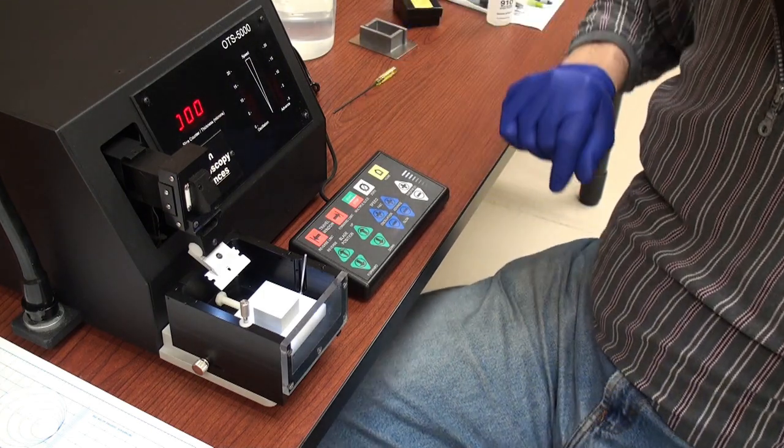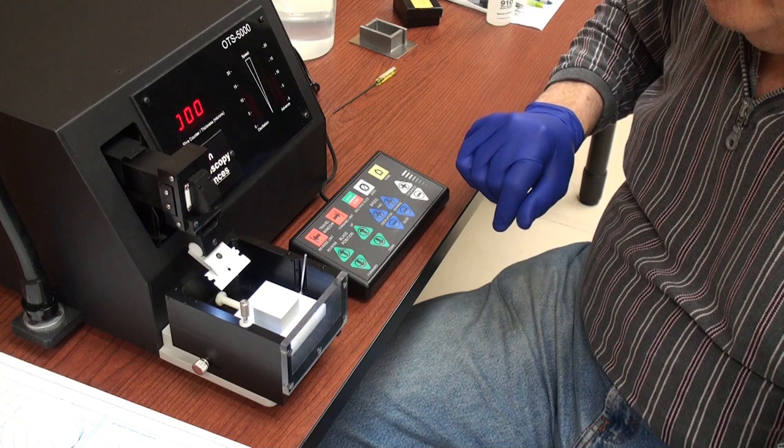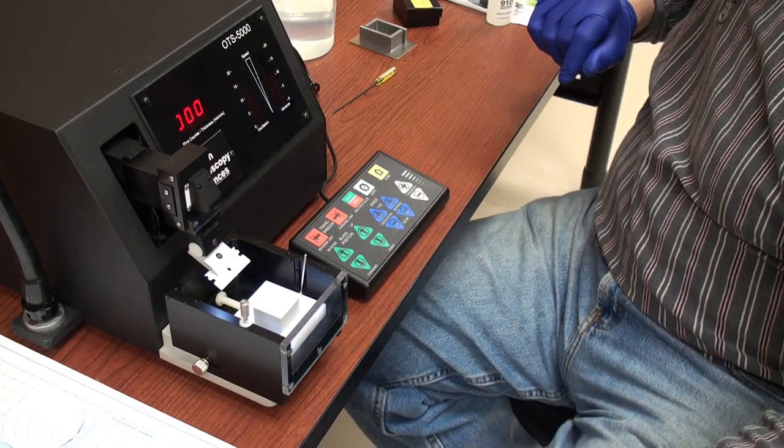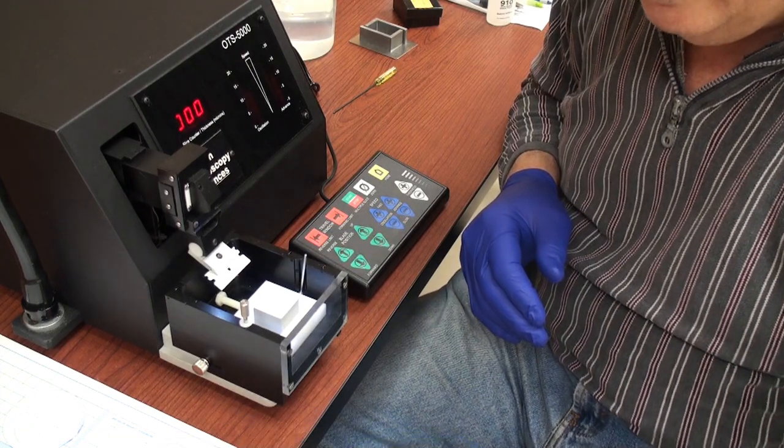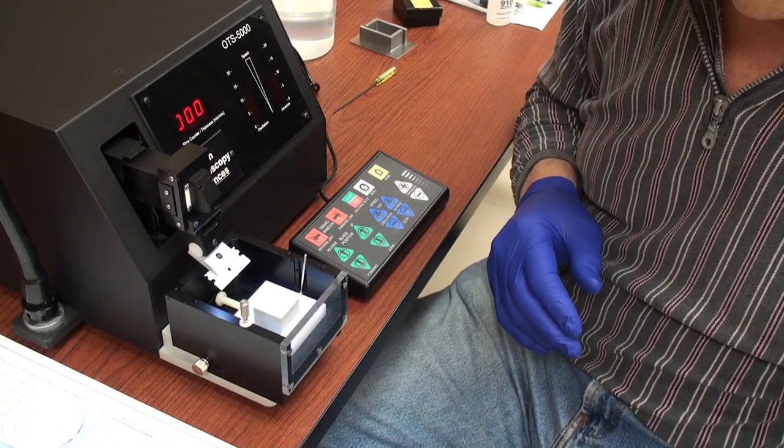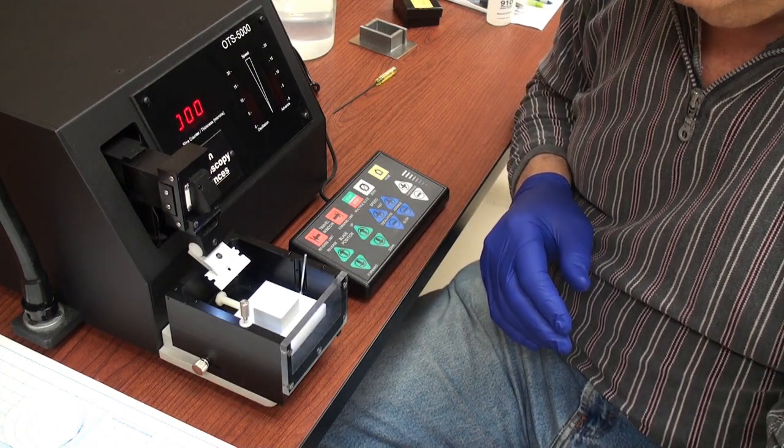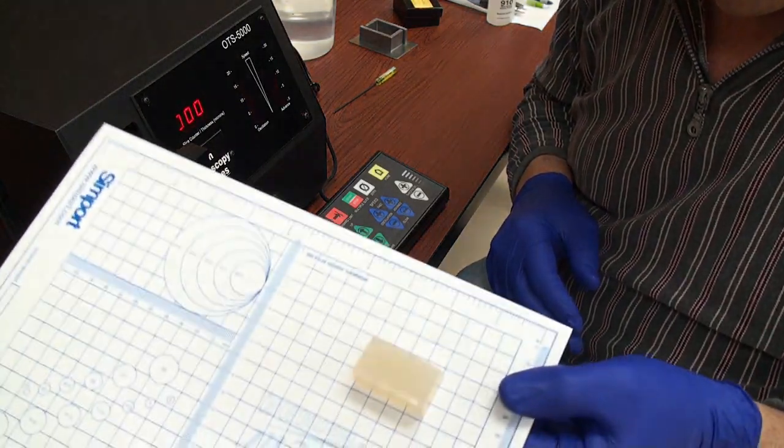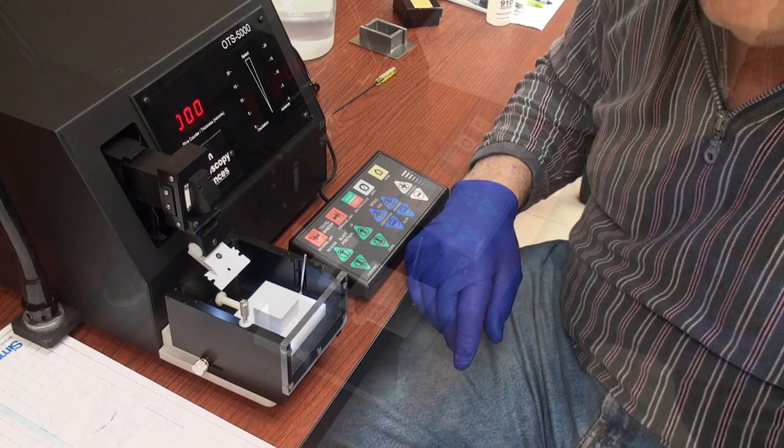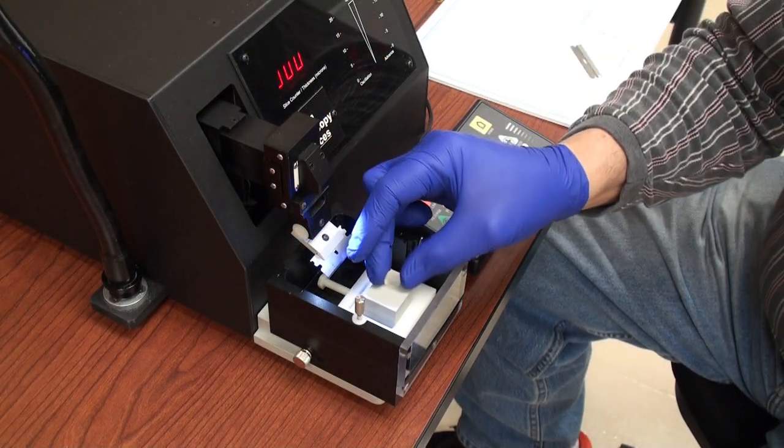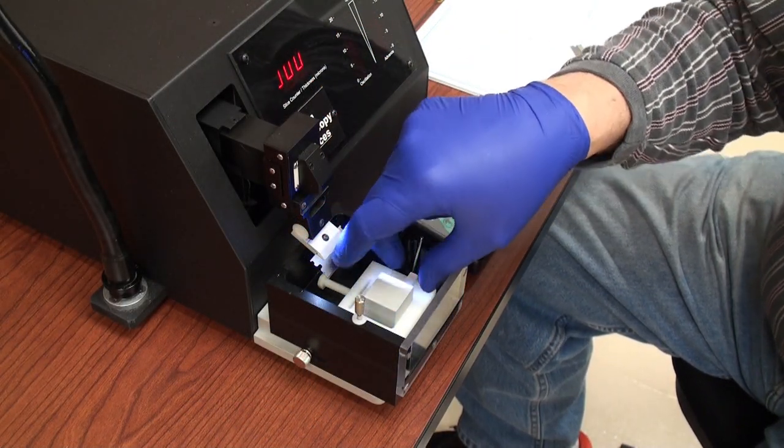Just set that aside. Now I am just going to use a regular razor blade to trim this agar block down to size so I can put it on the stage. Ok, now I have trimmed down a small piece of agar.